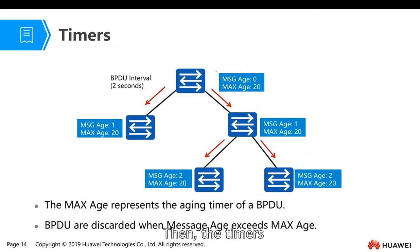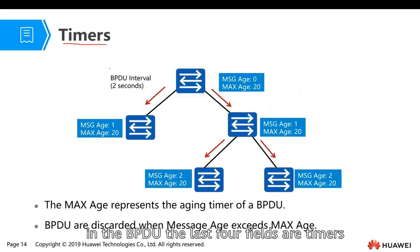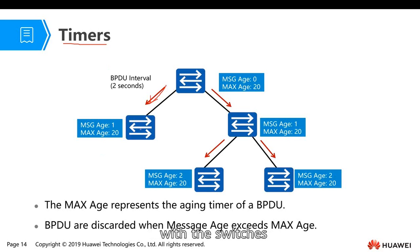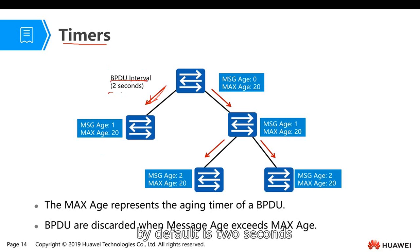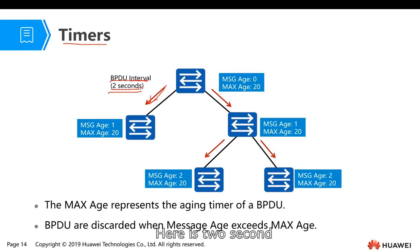And then the timers. As we know, in the BPDU, the last four fields are timers. Also as we know, the BPDU is negotiated with the switch at an interval. This interval is the BPDU interval — by default it's two seconds. Of course you can change it.